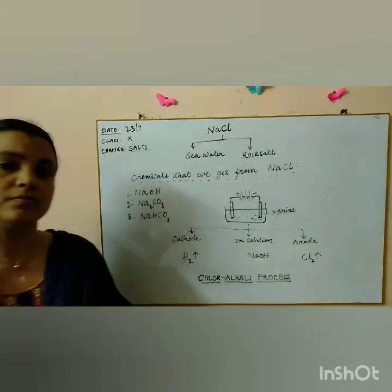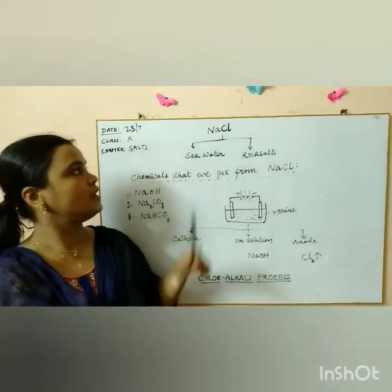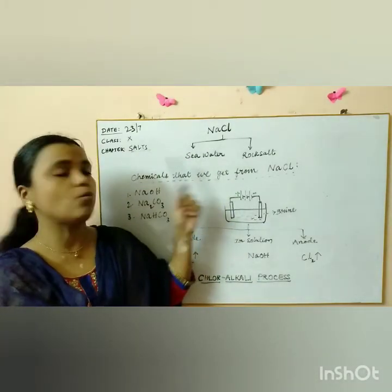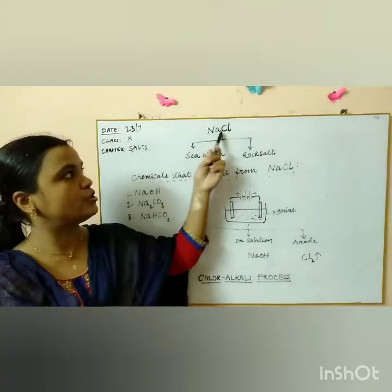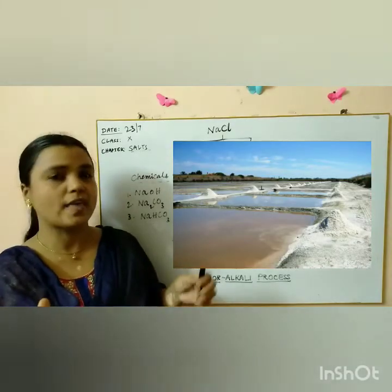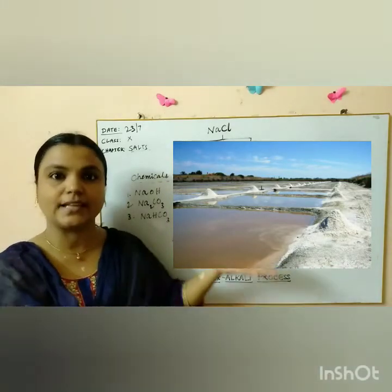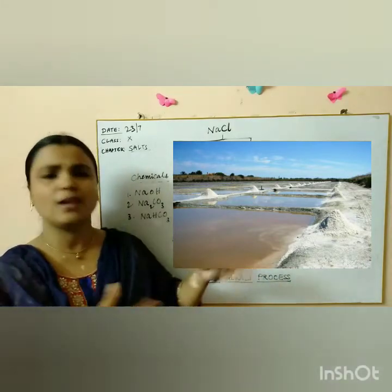So let's begin with the production of sodium chloride. How do we get salt? As you all know, seawater is the biggest source of sodium chloride. So how do they produce sodium chloride from seawater? It is by the process of evaporation. We all know that the seawater is collected in shallow pools or pits and then it is allowed to evaporate in the sun's heat.